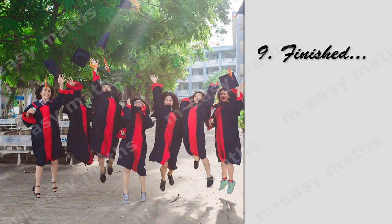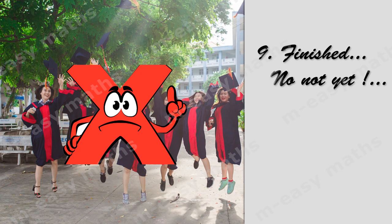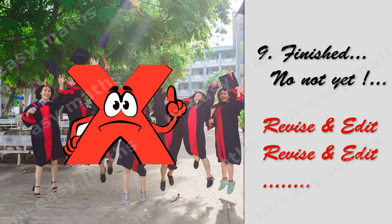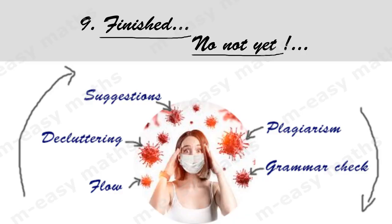Now you feel you have finished your work, but it is not so — you have not yet completed. You have to revise and edit repeatedly. First, check for the flow of your information, then go for decluttering. After decluttering, give your paper to colleagues or higher officials to check. Consider the pros and cons they mention, then again go for flow and decluttering until you are satisfied. Then go for plagiarism check and grammar check. When you pass these checks, it means you have succeeded and your paper is ready with innovative work.